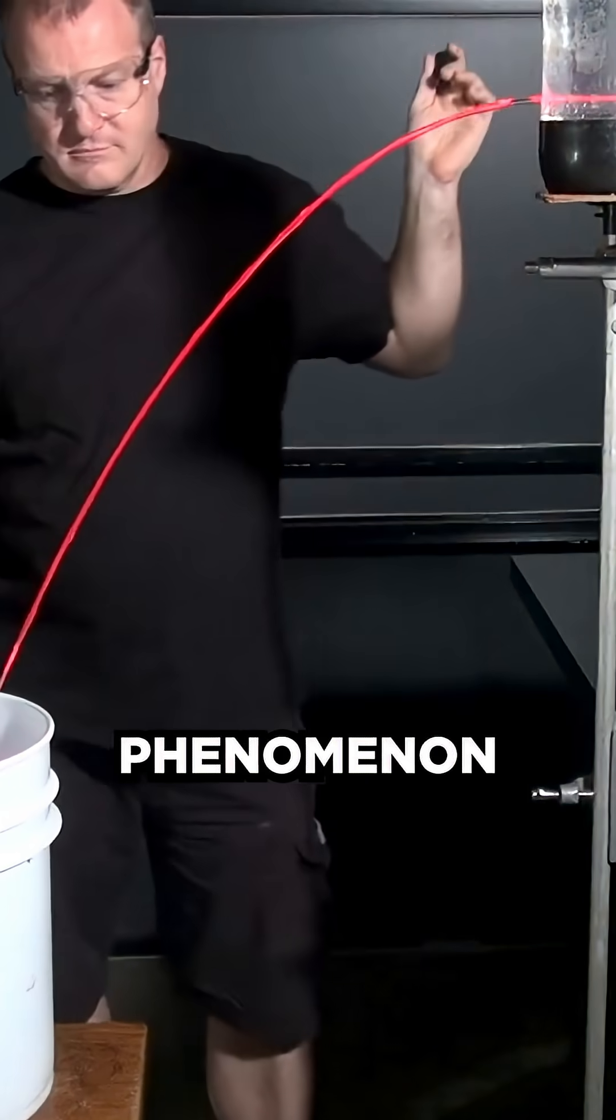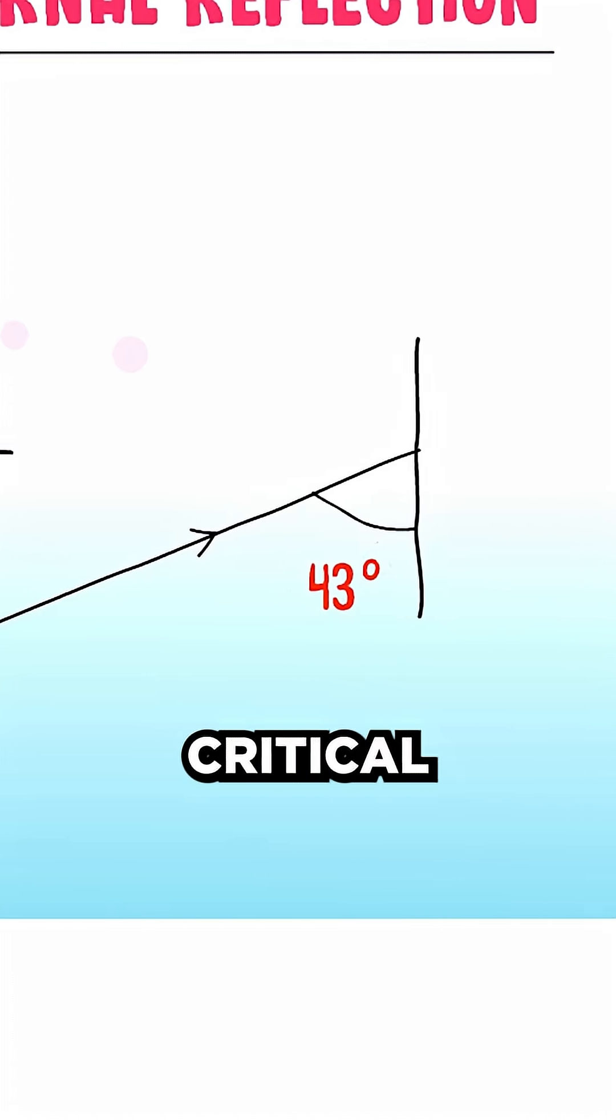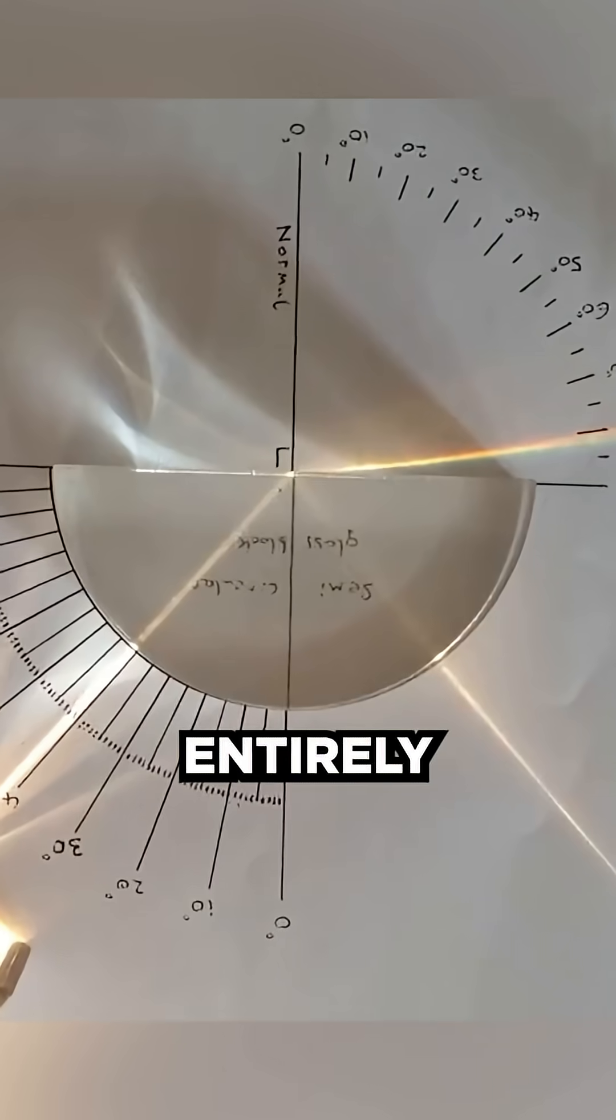The answer is a phenomenon called total internal reflection. Here's how it works. When light travels from a denser medium to a less dense one and hits the boundary at a certain critical angle, it doesn't escape. It reflects entirely back inside.